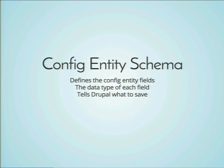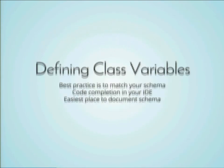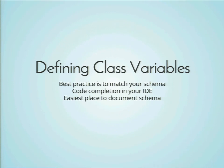In order to define the fields that belong on the configuration entity, we need to create a config entity schema. The schema is a key-value system that contains the data type of each field and what fields Drupal needs to save from the class. It's stored in the module root slash config slash schema, and it's just a series of name values with types and labels. Ideally we want to create a class variable for every field we define in the config entity schema. This gives us code completion in our IDE, and it's also the easiest place to document the schema — document it in the entity class, not the YAML file.